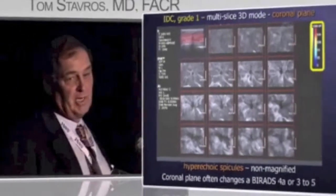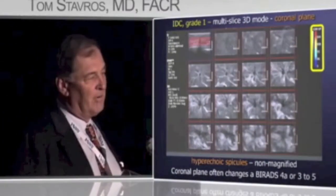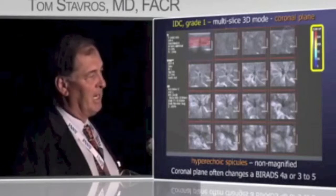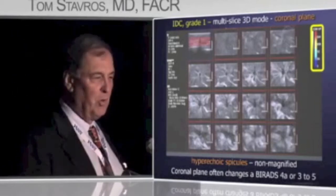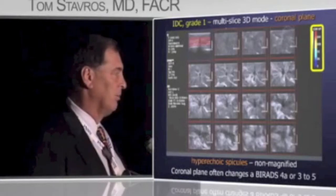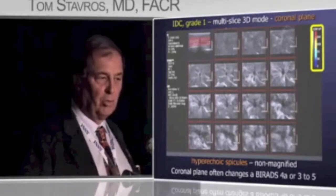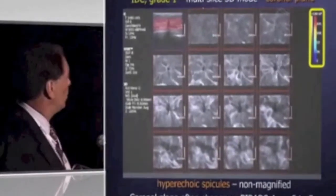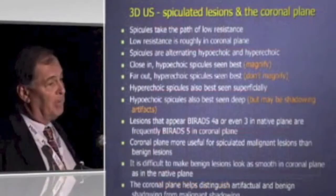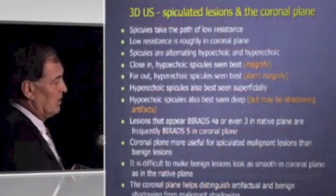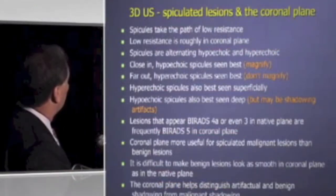This is really important. If you look at only the hypoechoic features, you're never going to get above about 85% sensitivity, maybe 90%. If you want to get to 98%, you have to look at both the hypoechoic and hyperechoic elements, and the coronal plane shows them in spades. Spicules take the path of low resistance between the collagen fibers, which is roughly in the coronal plane.